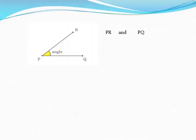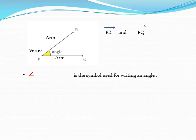Whenever you write the arms of an angle, don't forget to put the symbol of ray above the arms. This is the symbol used for writing an angle.